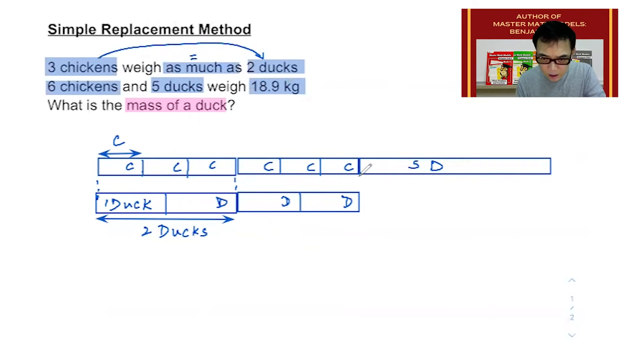We will carry that same model down to bring it here and here. These two models represent the same total. If they represent the same total, then it means that 6 chickens and 5 ducks have the same value as how many ducks?